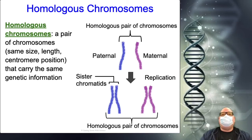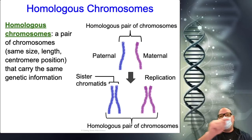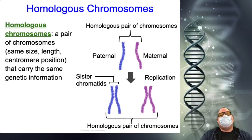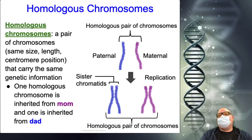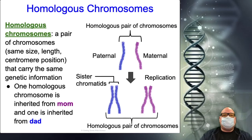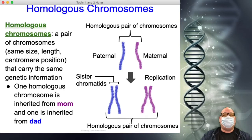In mitosis, when chromosomes are copied we make exact copies — like making a copy of your driver's license. In sexual reproduction, one homologous chromosome comes from mom and one comes from dad.